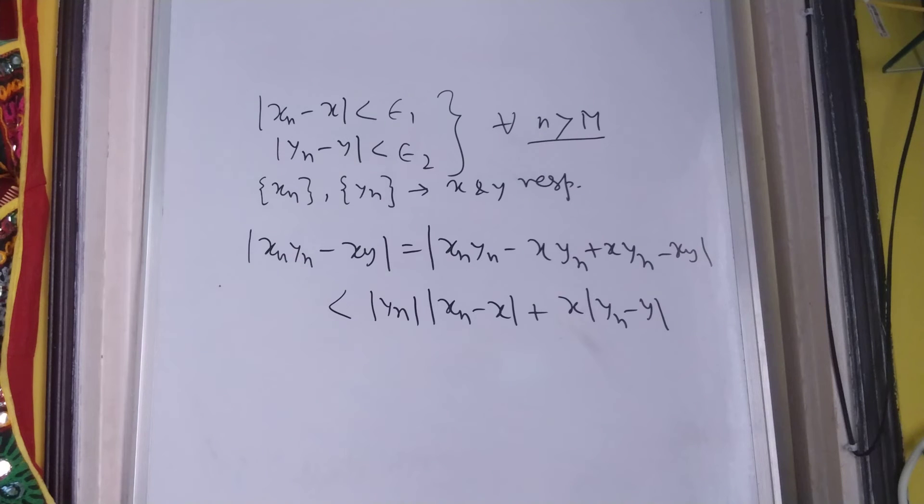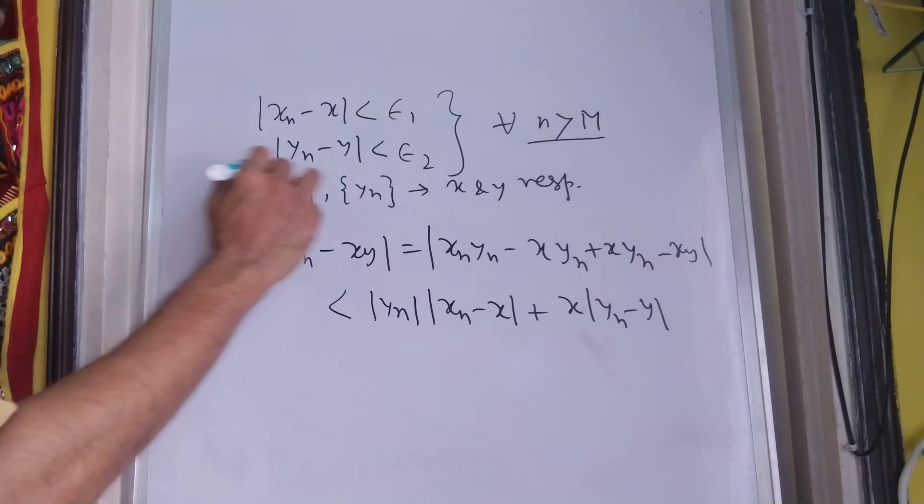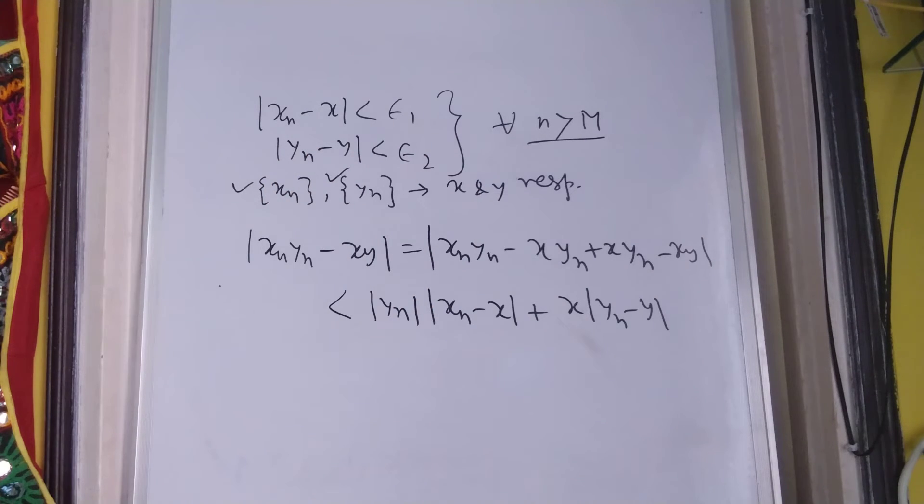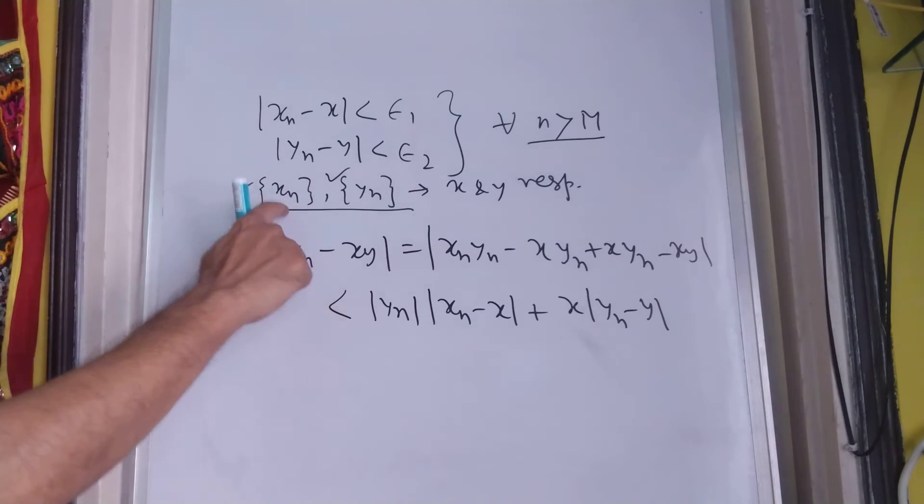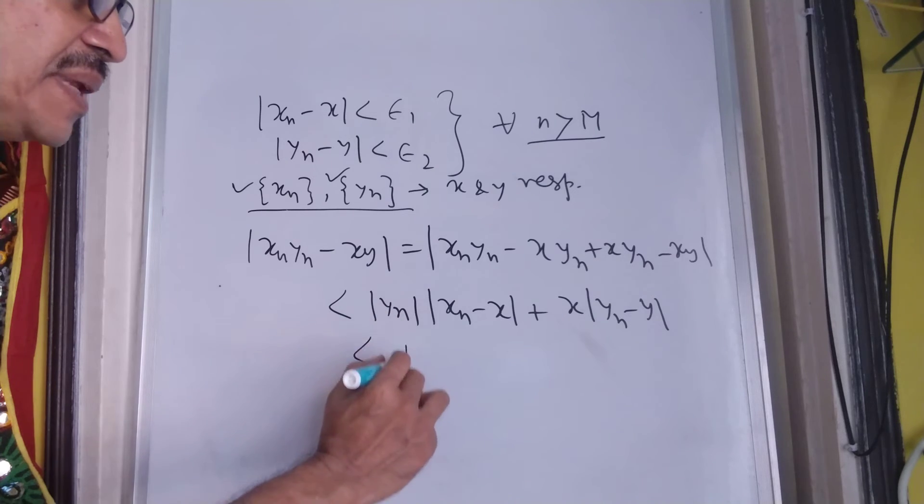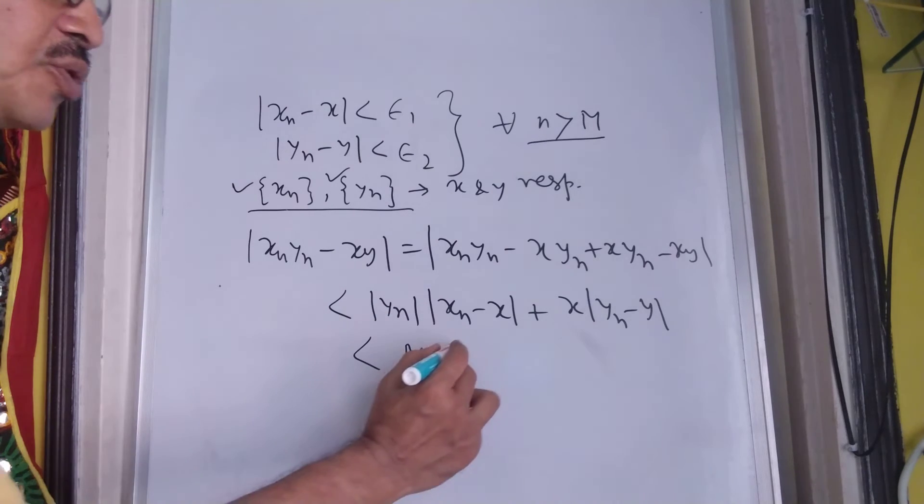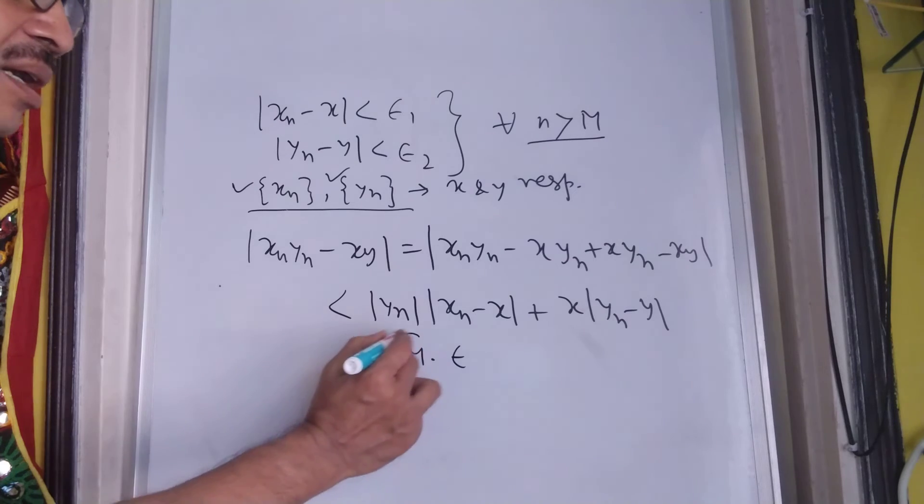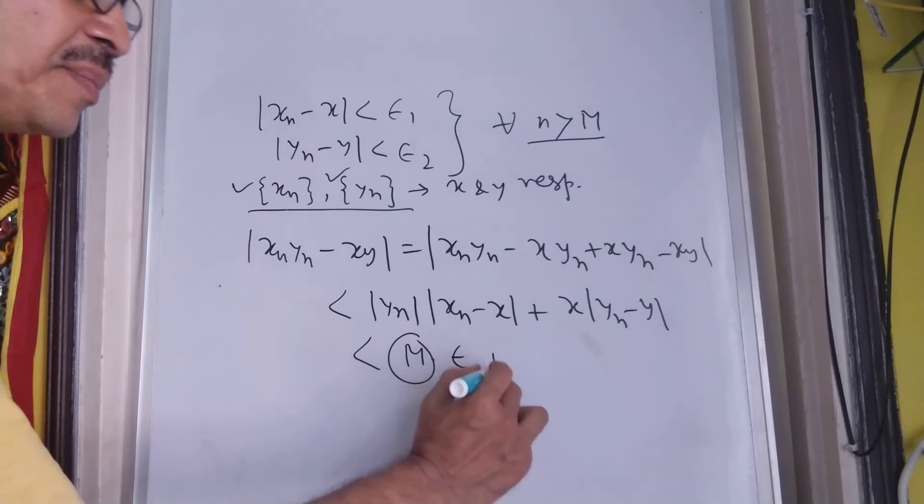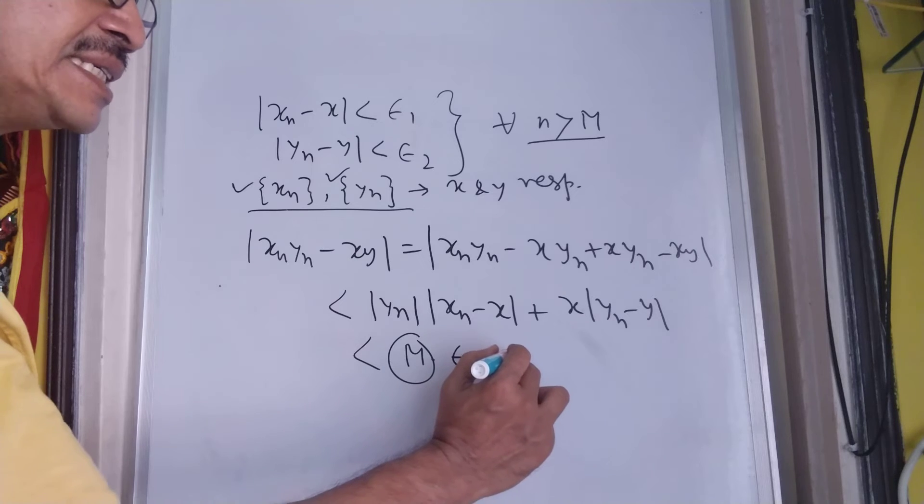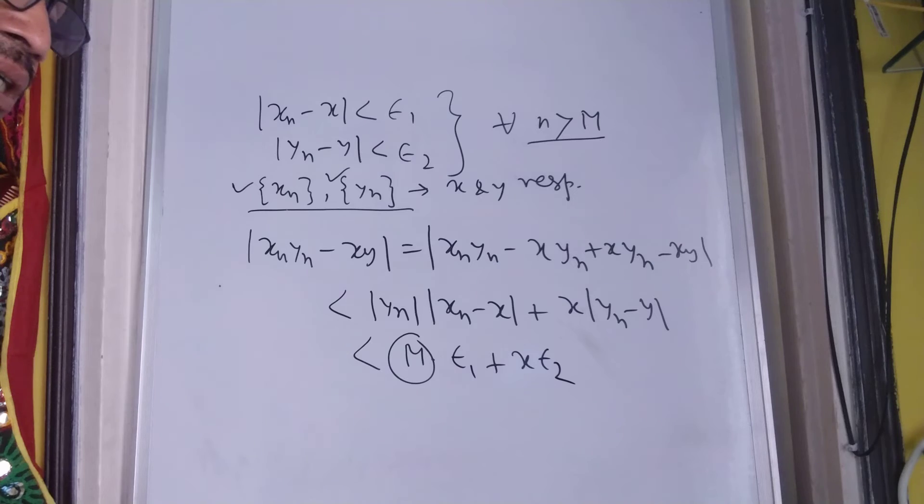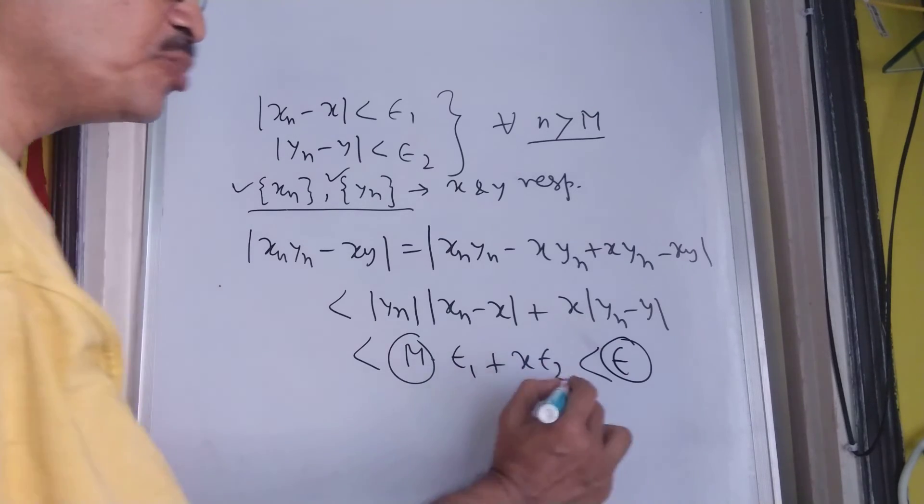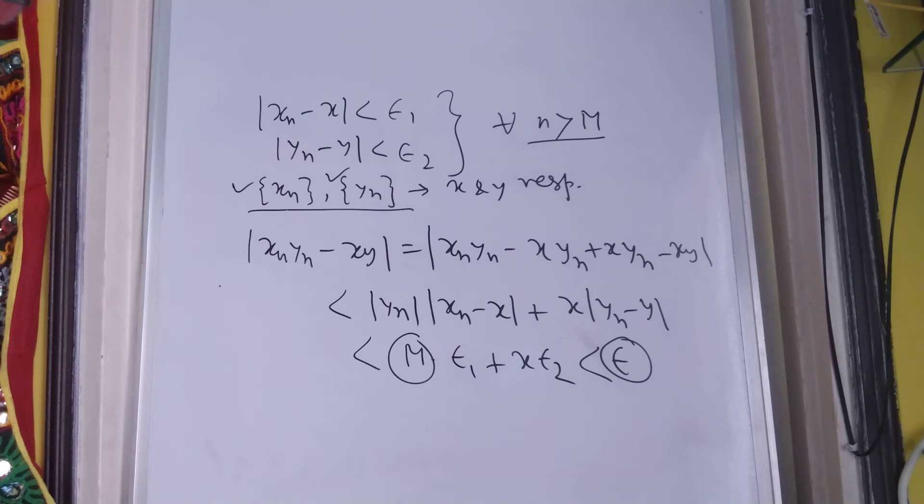Now, remember that since both of them are convergent, so they must be bounded. This is very crucial. And since both of them are bounded, we can replace this as m into epsilon 1 which is the bound of yn plus x, and x is a finite quantity, this into epsilon 2, and you can easily conceive this to be another arbitrary small number.